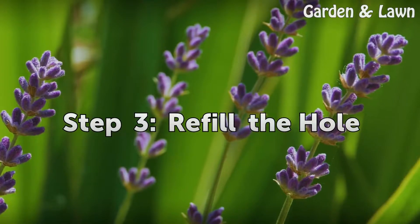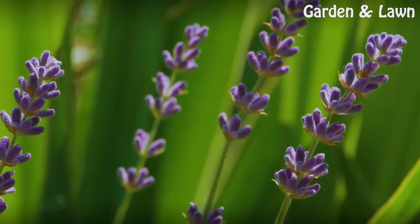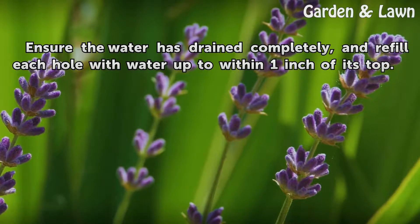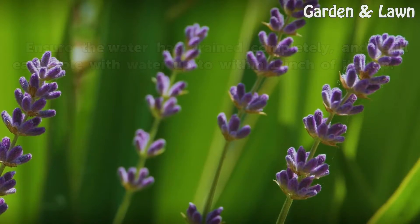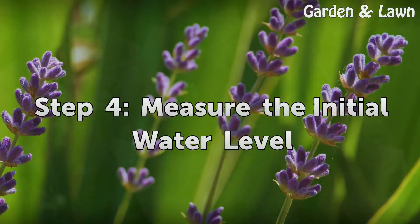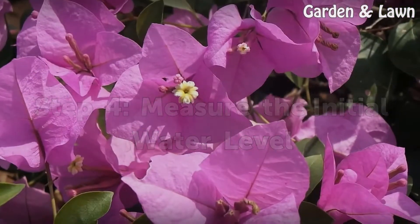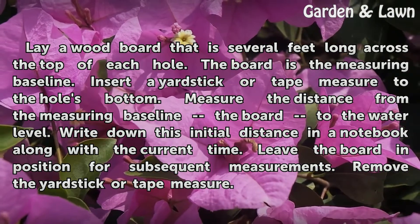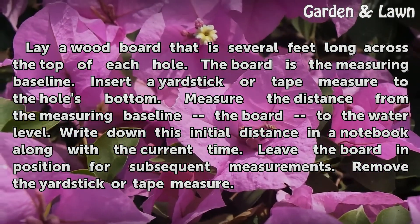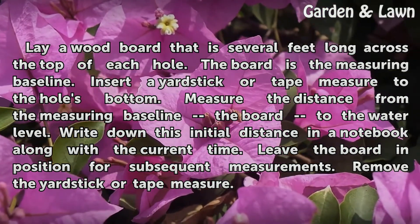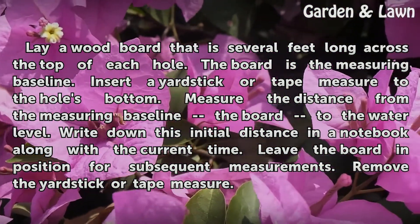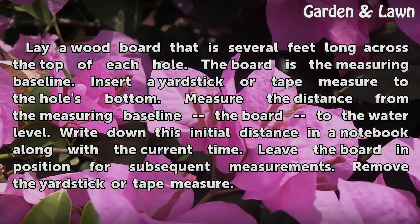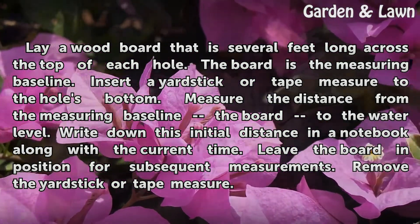Step 3: Refill the hole. Ensure the water has drained completely, and refill each hole with water up to within one inch of its top. Step 4: Measure the initial water level. Lay a wood board that is several feet long across the top of each hole — the board is the measuring baseline. Insert a yardstick or tape measure to the hole's bottom and measure the distance from the board to the water level. Write down this initial distance in a notebook along with the current time, and leave the board in position for subsequent measurements.